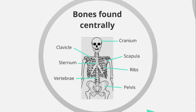We then have the sternum, which runs straight down the chest. We then have the ribs, which come in different pairs. We then have the vertebrae, a series of individual bones that make up the vertebral column, sometimes referred to as the spinal column. And finally we have the pelvis. So within that central area we have seven bones to remember.